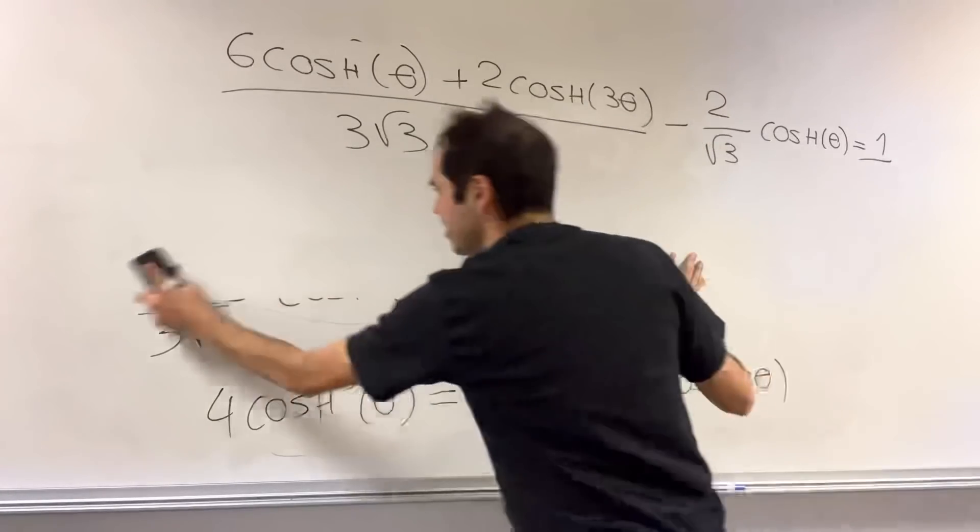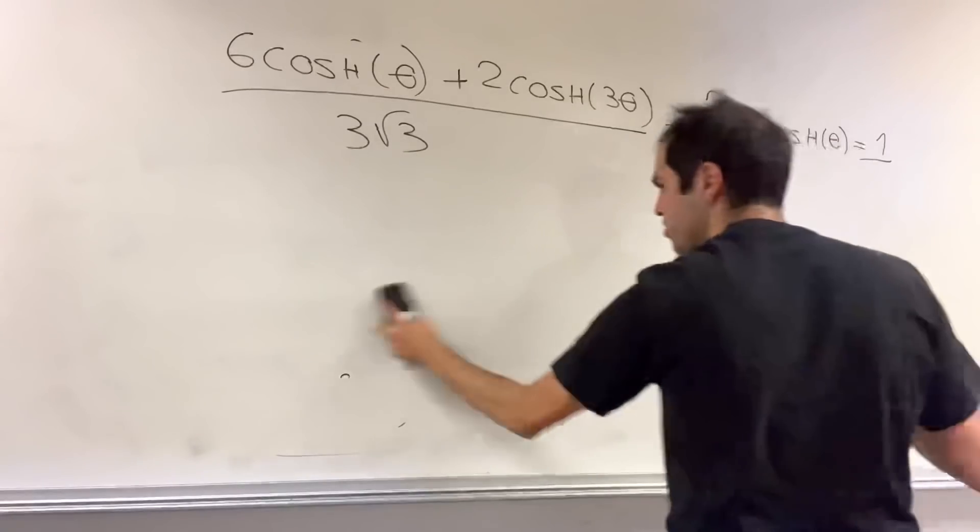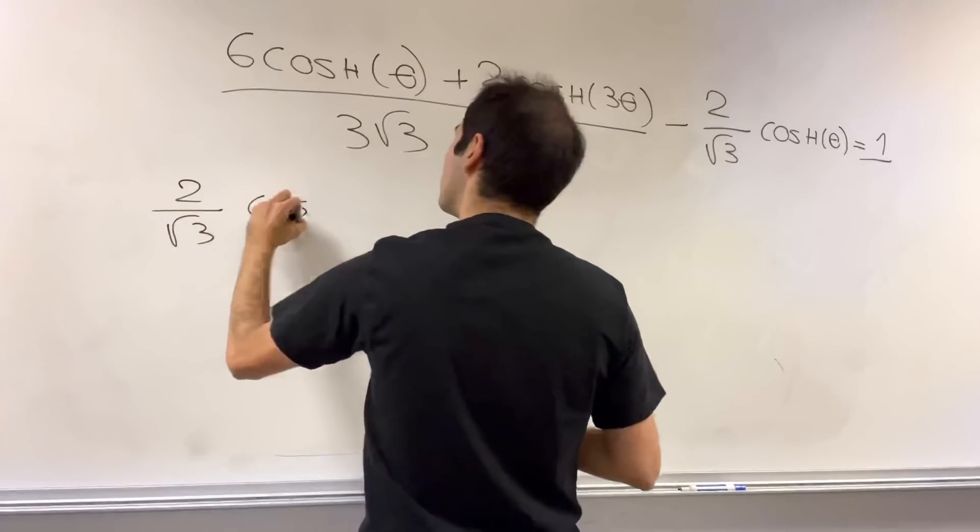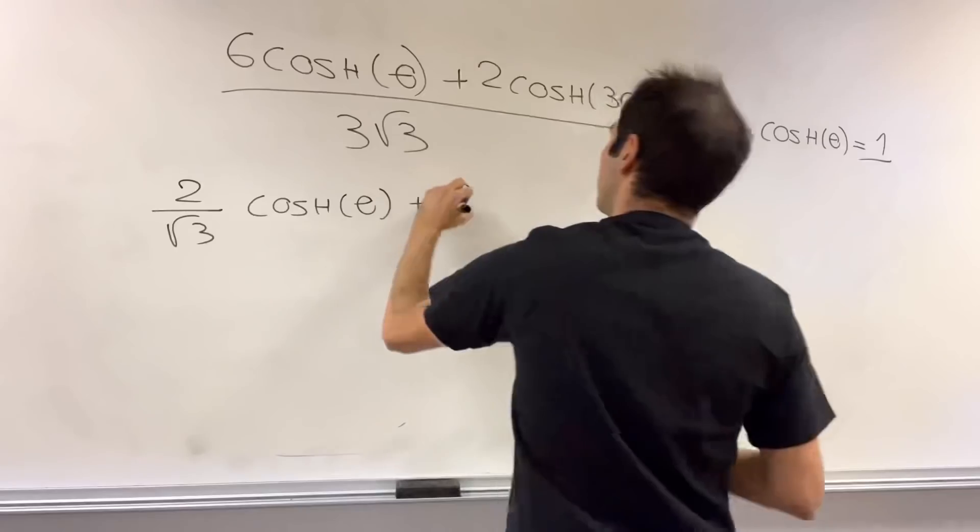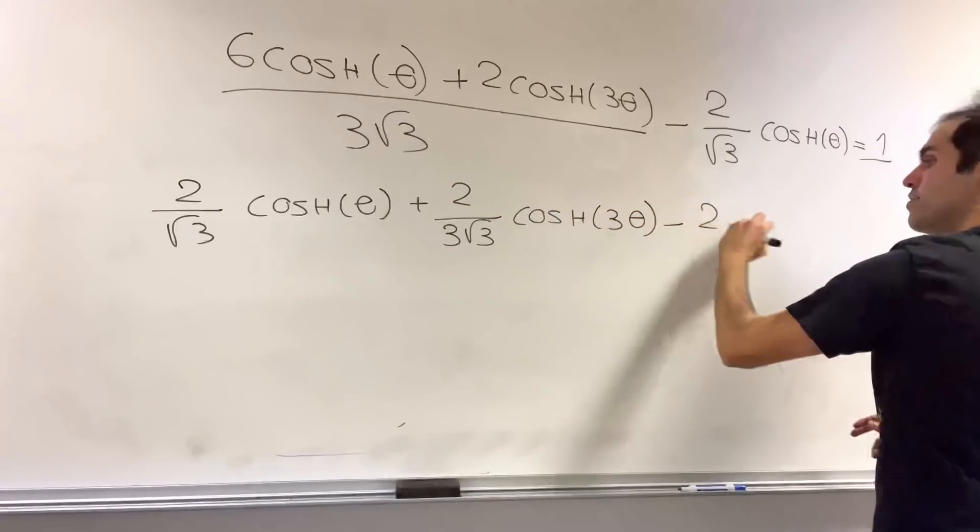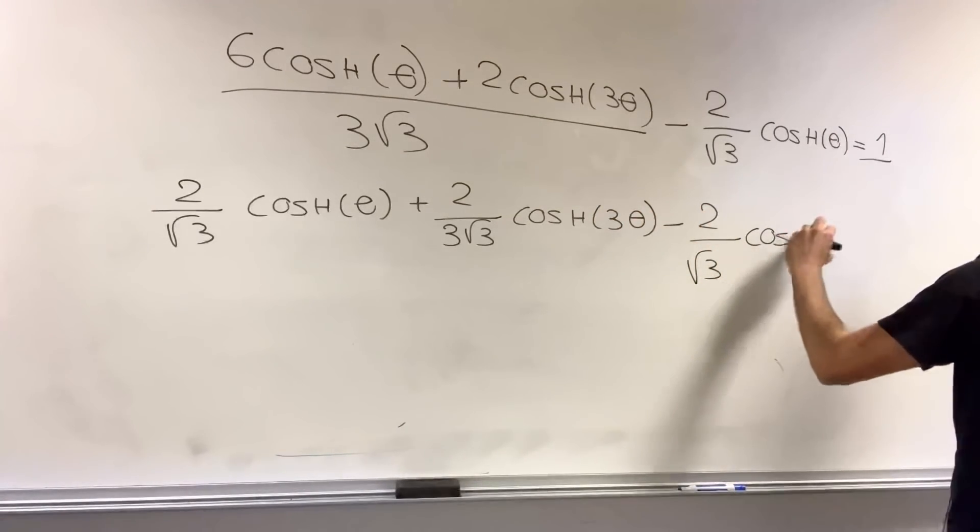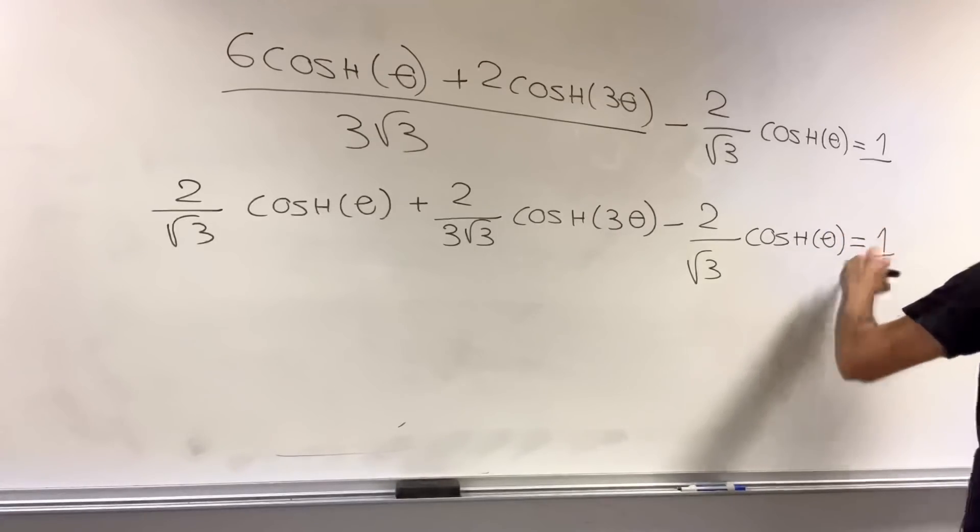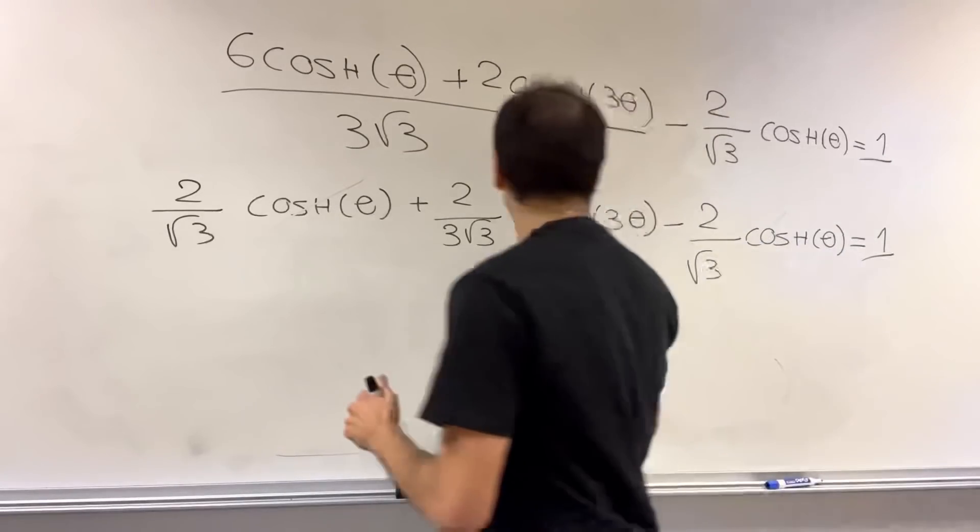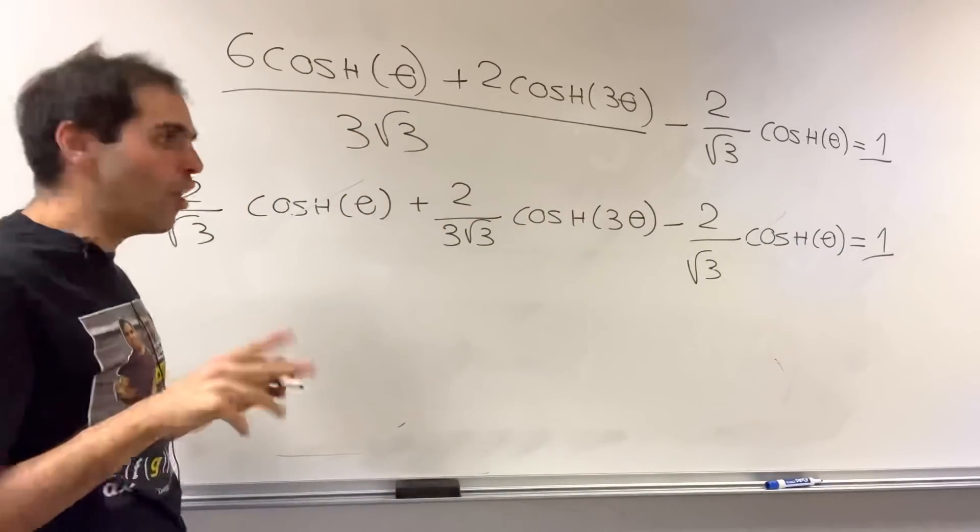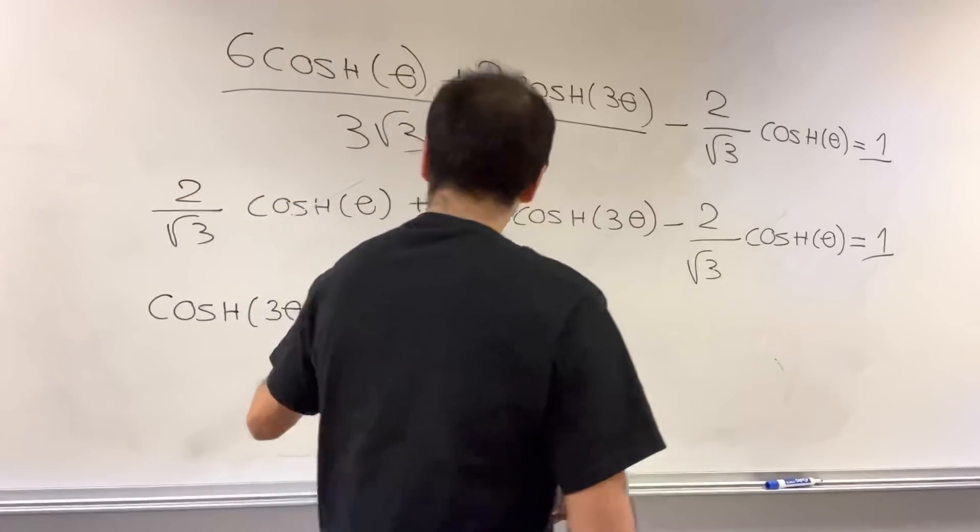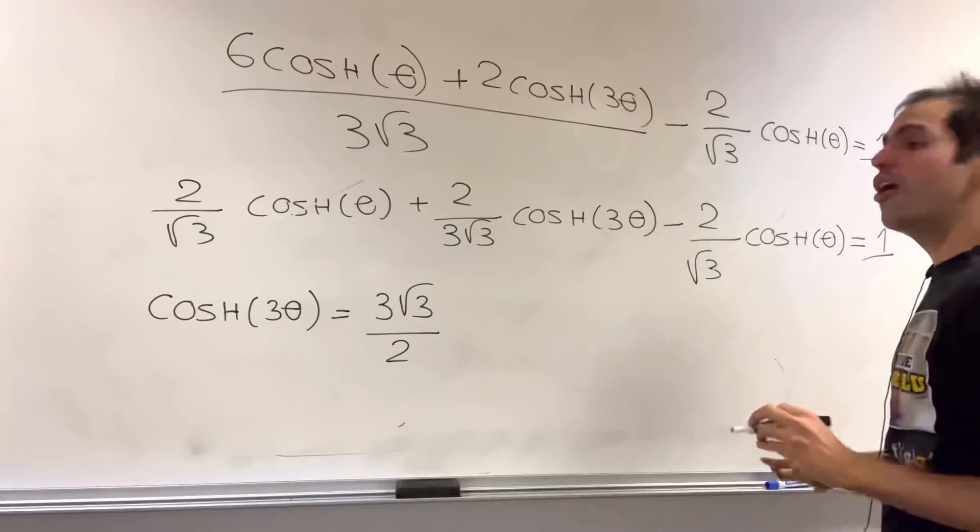And the cool thing is there is now a simplification that allows us to solve for theta. So then what we get is two over square root of three, cosh of theta plus two over three square root of three, cosh of three theta minus two over square root of three, cosh of theta equals one. And notice now the evil cosh terms, they cancel out, and in the end what we can do, we can now solve for cosh of three theta. So cosh of three theta equals three square root of three over two, and now we can solve for theta.